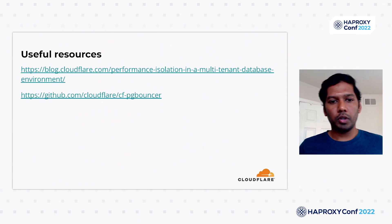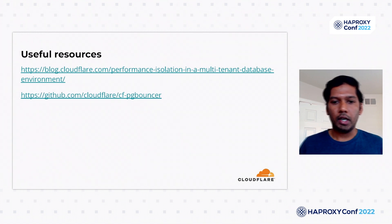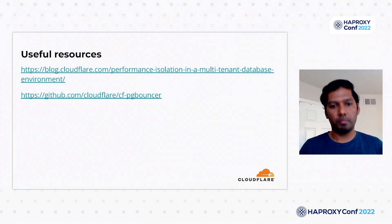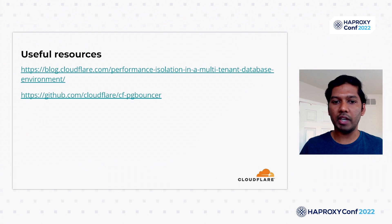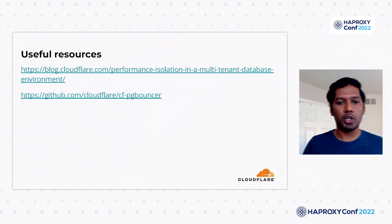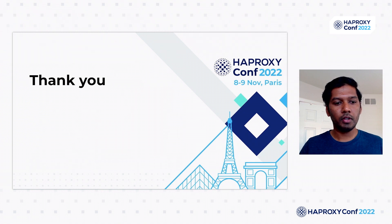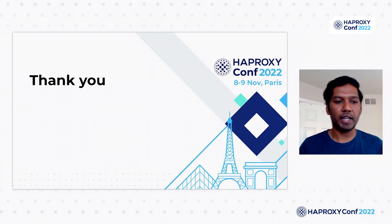There are a few useful resources. We blogged about how we achieve performance isolation in a multi-tenant database environment, which gives a good overview of the PG Bouncer, HAProxy, and health check setup. We also open-sourced our fork of PG Bouncer. Thank you very much — I'm happy to answer any questions.